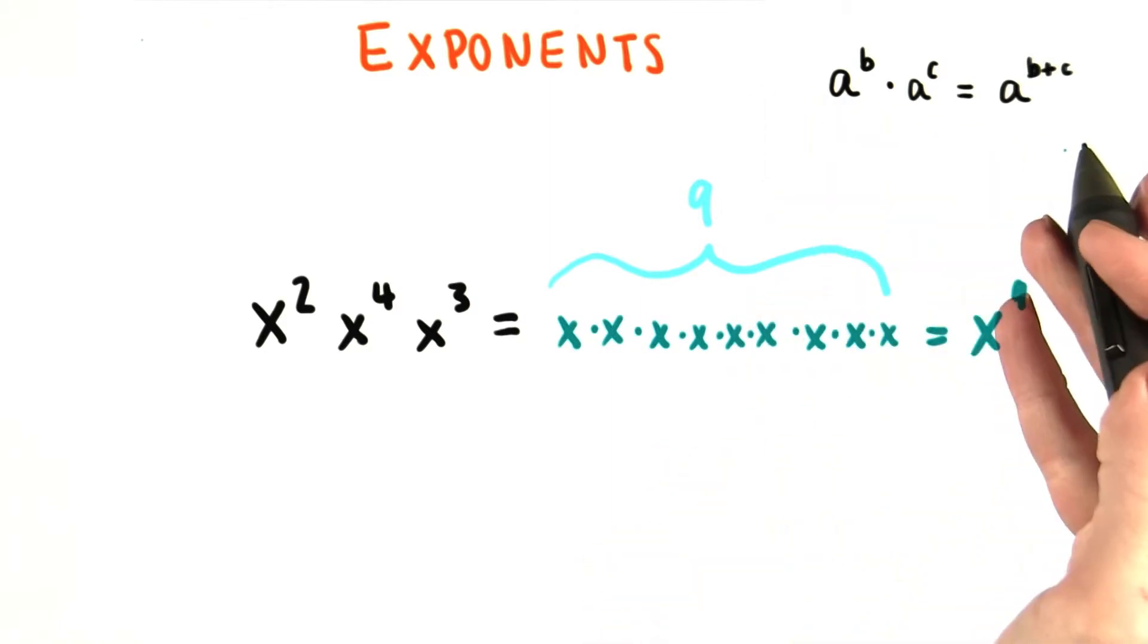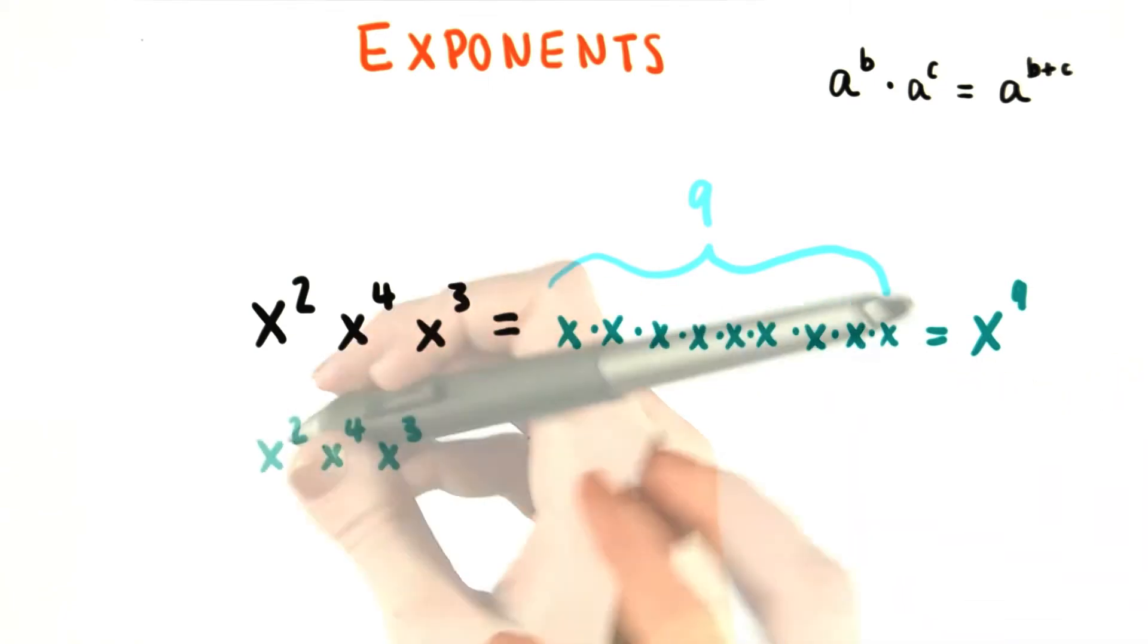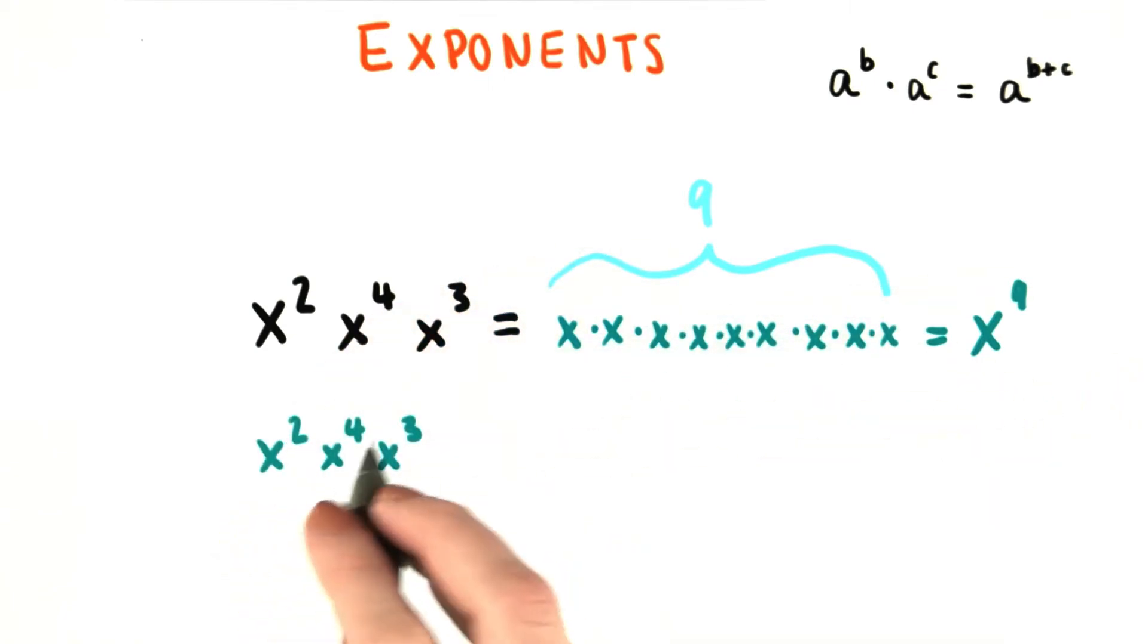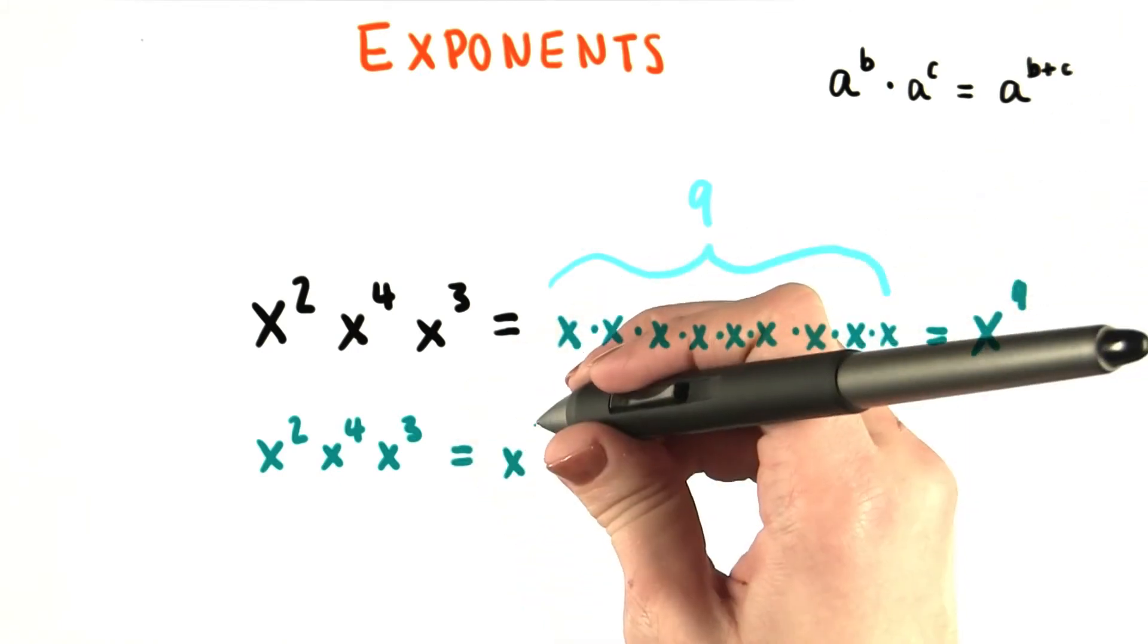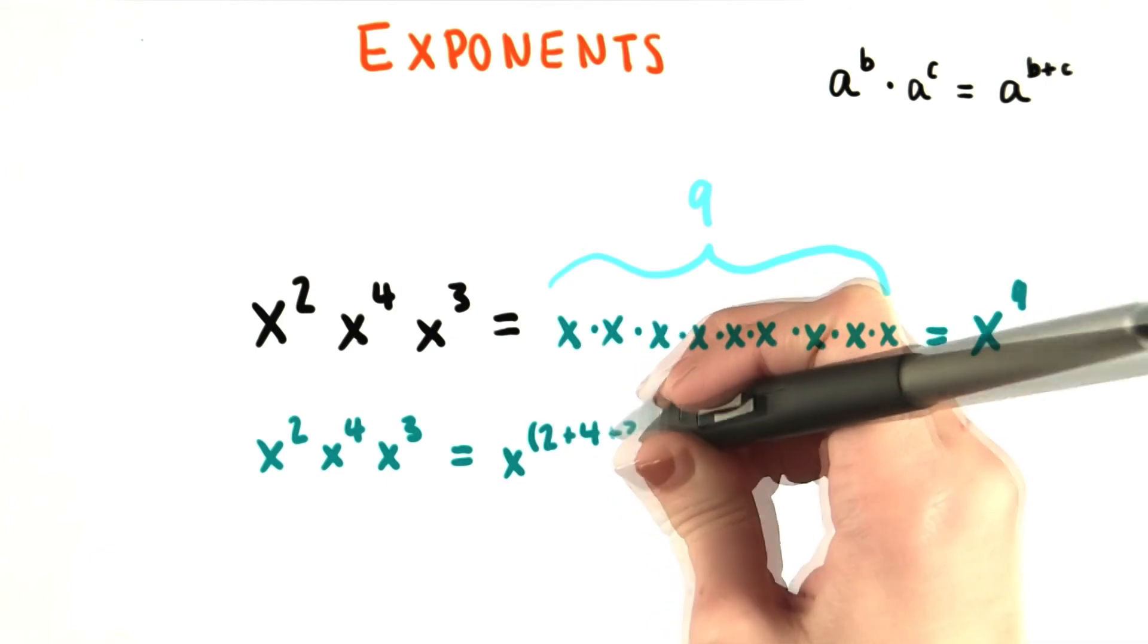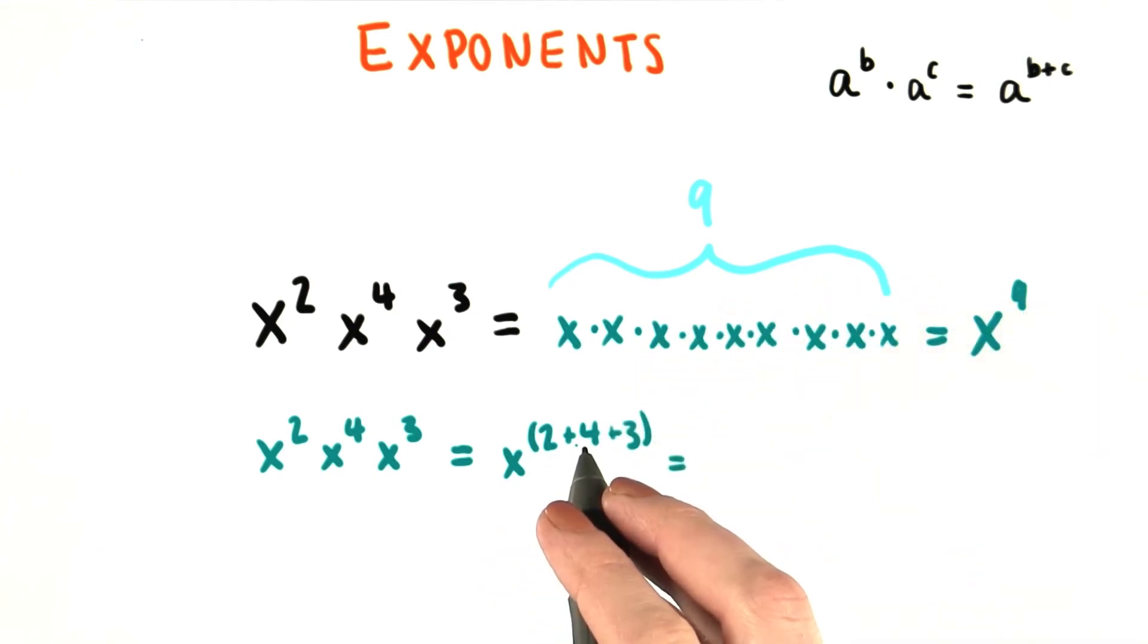However, we can use our rule to do this in a much shorter and easier way. We can get the same answer by just adding these three exponents together. We know that our base is still x, but our power is just 2 plus 4 plus 3. 2 plus 4 is 6 plus 3 is 9. So we get the same answer.